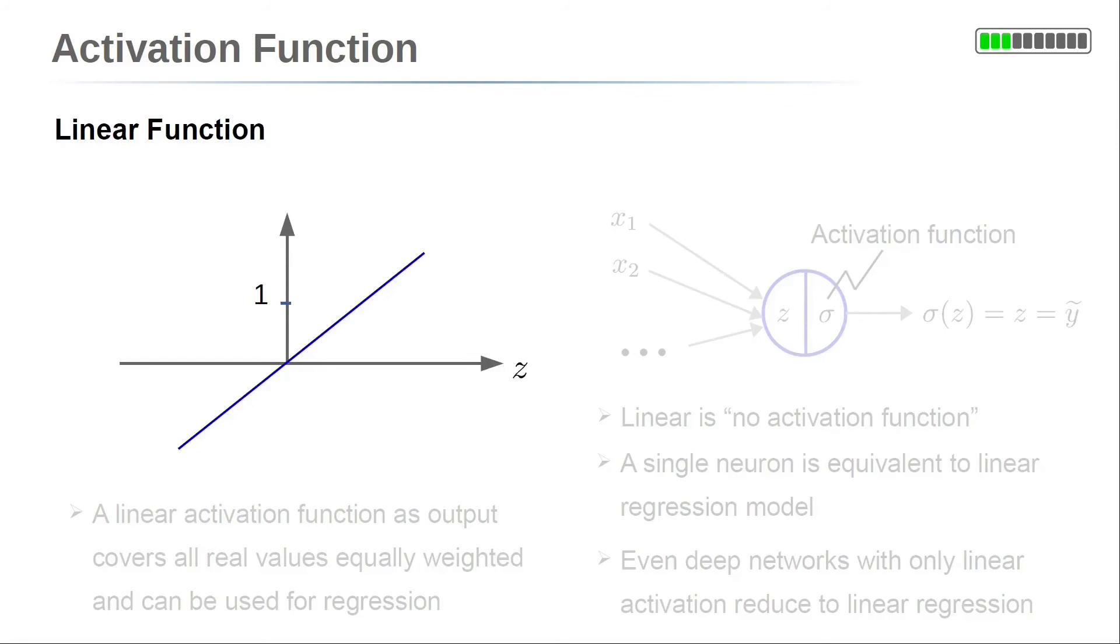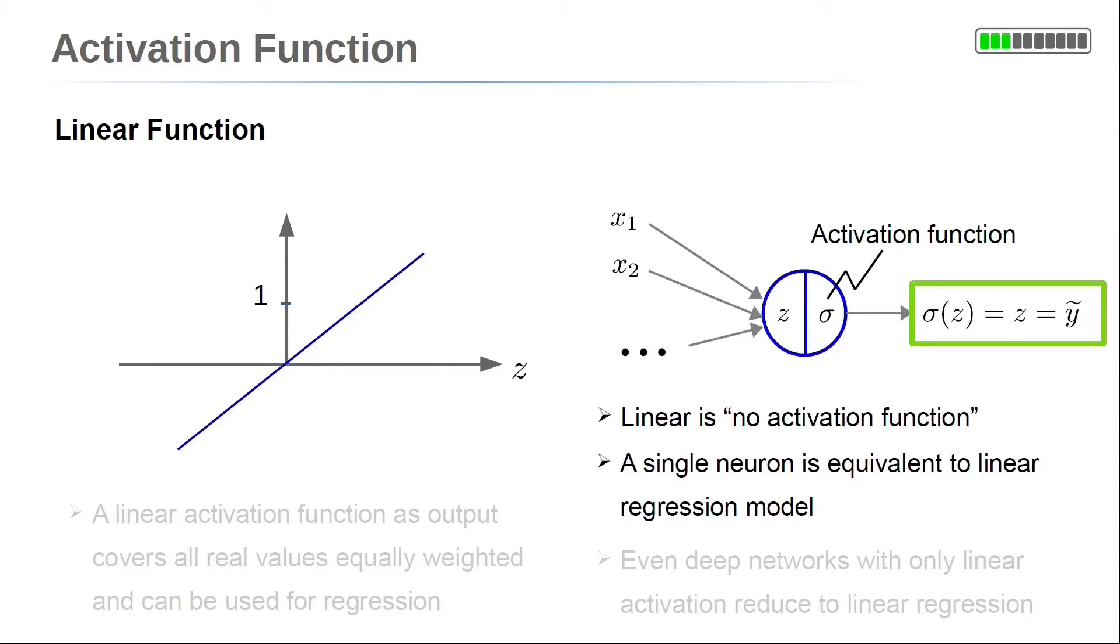The simplest version of an activation function is the linear function. This means no nonlinear activation is applied to the summation of the linear combinations of the neurons. So, it's like no activation is applied at all. The linear activation function is usually applied for output neurons of a regression problem.